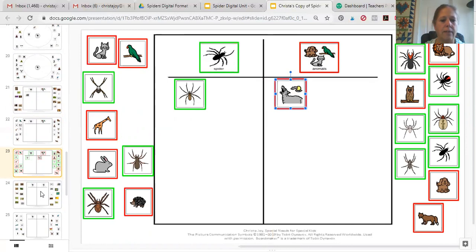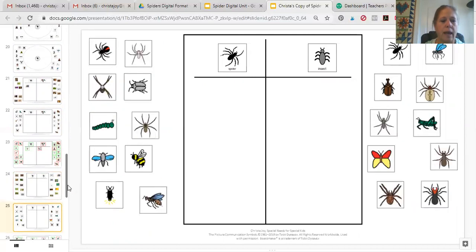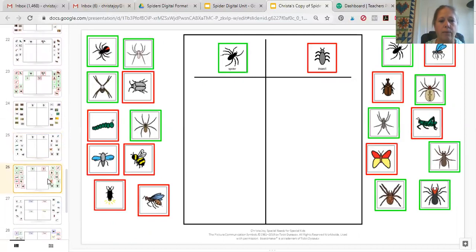There's that activity, same idea but this is spiders versus insects with real pictures, again with some picture symbols and again with the color coding.